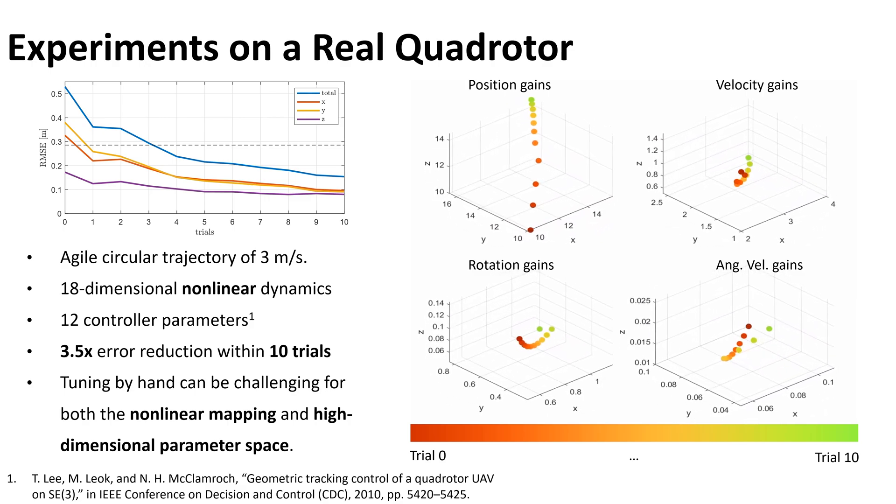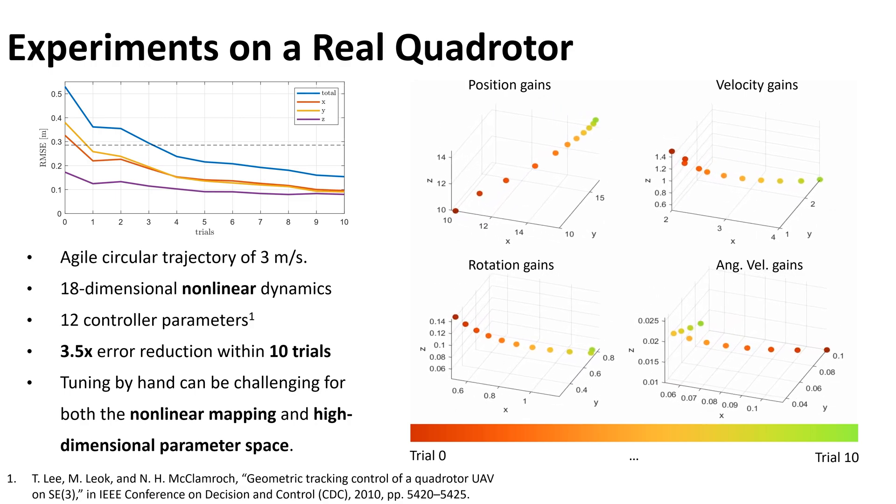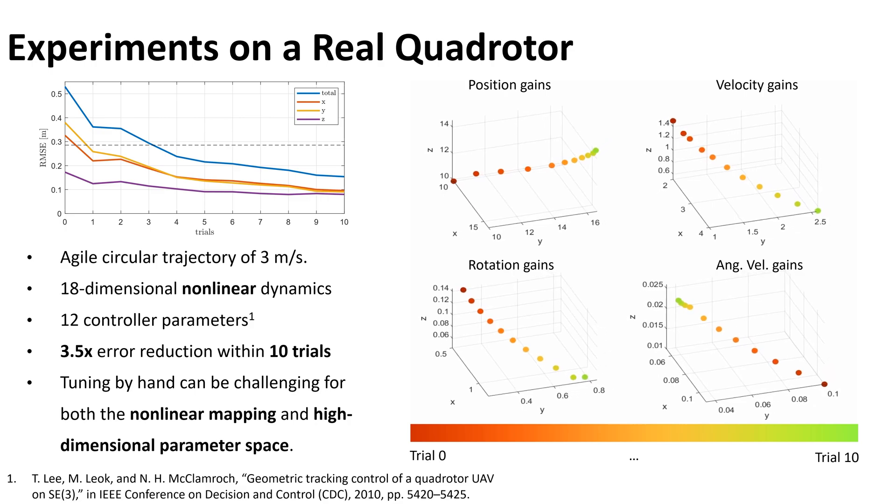One can see the nonlinear relationship between the parameters and the tracking error by observing the direction changes in the parameters' evolution through the trials.